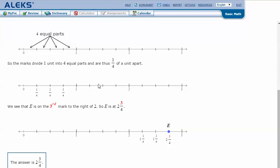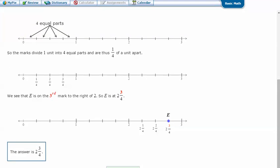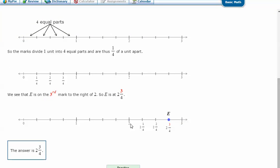One and one-fourth, one and two-fourths, one and three-fourths, two. Two and one-fourth, two and two-fourths, two and three-fourths, three. We see that E is on the third mark to the right of the two. So two, two and a fourth, two and two-fourths, two and three-fourths. So E is at two and three-fourths.